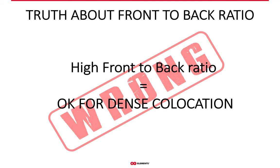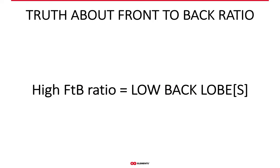The next time you have a conversation about front-to-back ratio, you can be sure that if anyone says high front-to-back ratio means an antenna is great for collocation, that person is either misinformed or simply didn't go deep enough with the topic. High front-to-back ratio means that the back lobe is small — the lobe pointing in the opposite direction from the main lobe. It can also mean that the group of side lobes around the back lobe is small, depending on how the front-to-back ratio was determined.